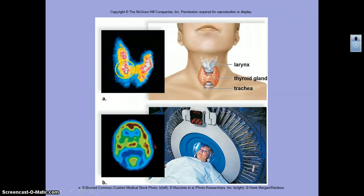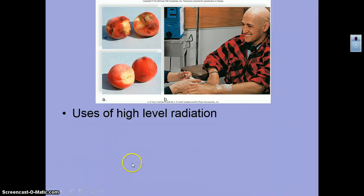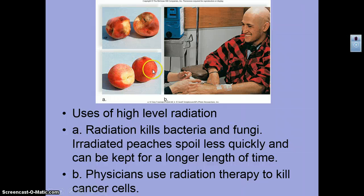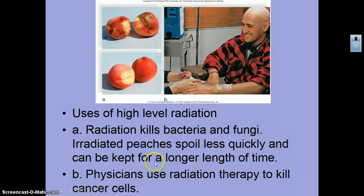You can also see tumors in the thyroid scan because they didn't absorb the radioactive iodine. We also use high levels of radiation — for example, these peaches: the top ones look decayed while the bottom ones look fresh because they've been irradiated with radiation that kills off bacteria and slows spoilage. Physicians also use high doses of radiation to kill cancer cells.